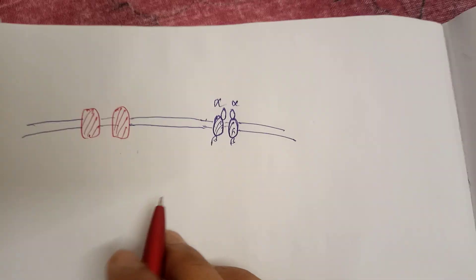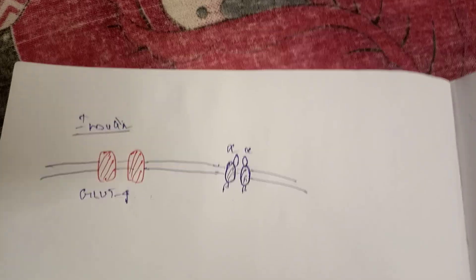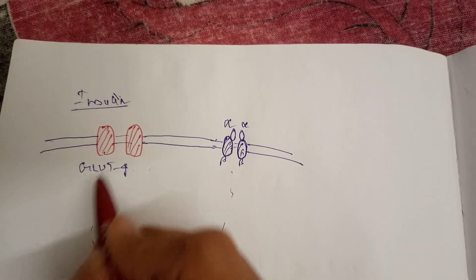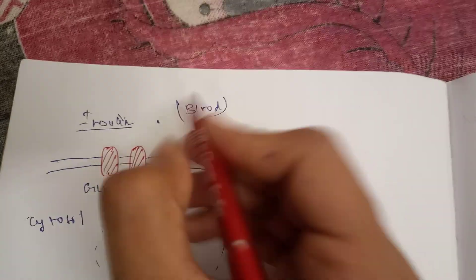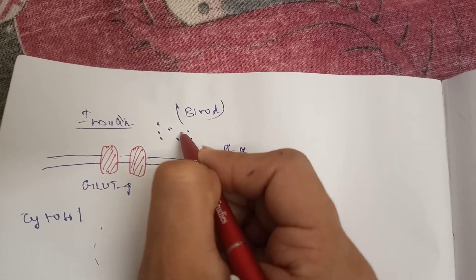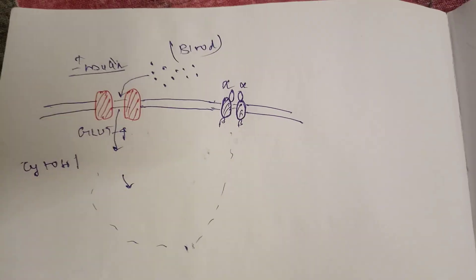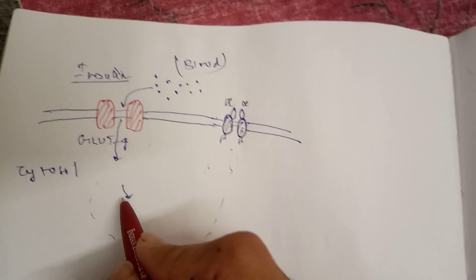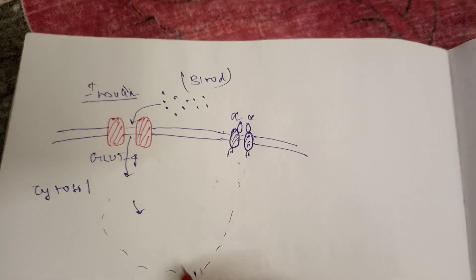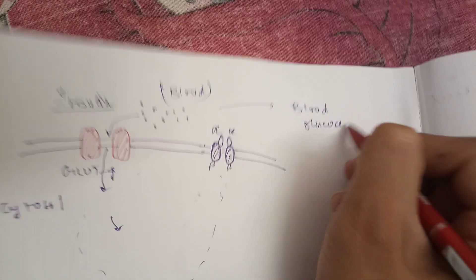GLUT4 is a transmembrane protein. After all the signaling mechanisms, GLUT4 is recruited to the membrane. In the blood, glucose molecules are present. With GLUT4 now in place, glucose is allowed to enter the cytosol of the cell. This is how, with the help of insulin and its signaling mechanisms, glucose uptake occurs, and as a result, blood glucose levels decrease.